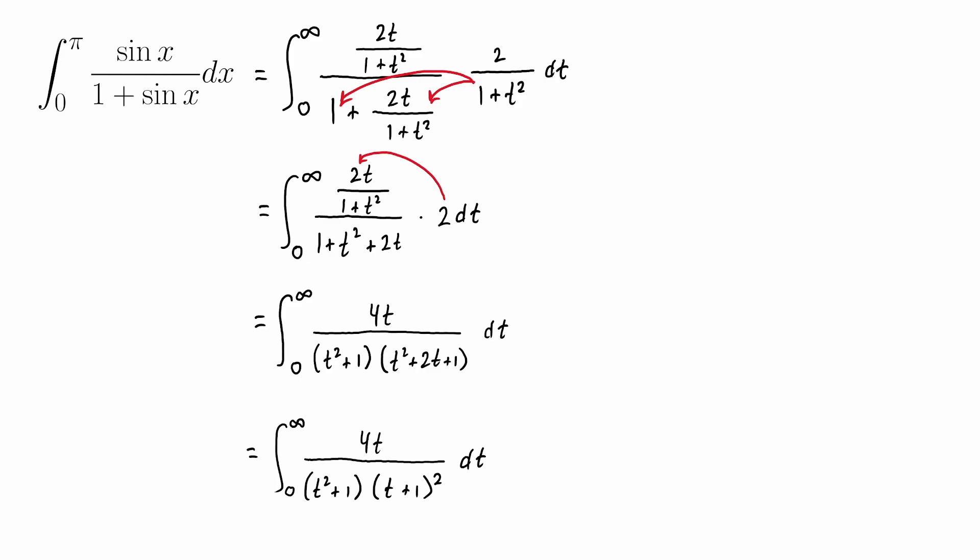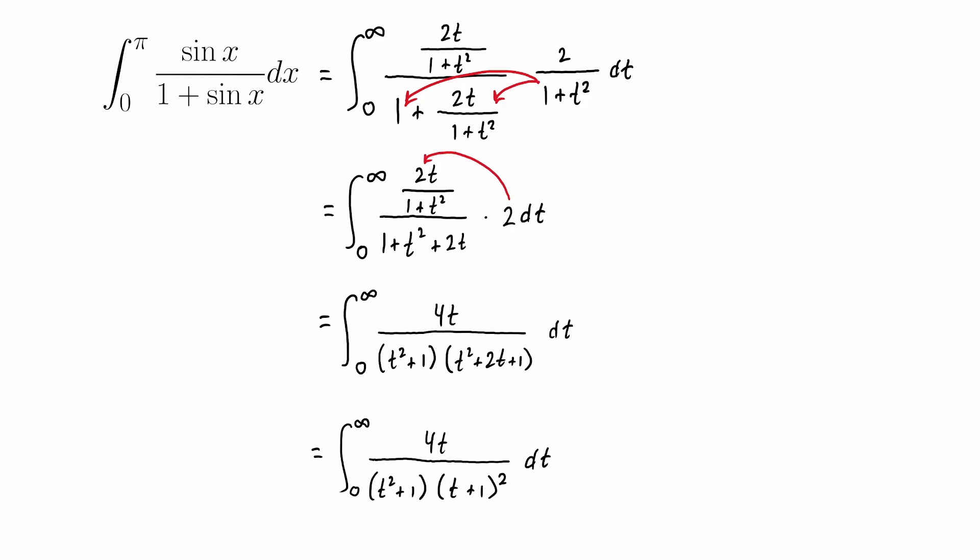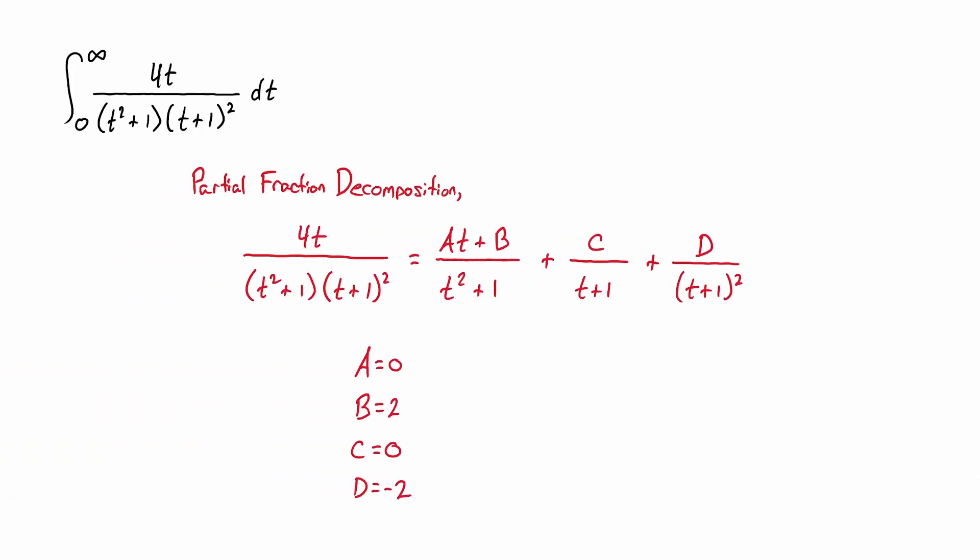I have the end result for the partial fraction decomposition here. With a little bit of algebra, you should be able to find that a equals 0, b equals 2, c equals 0, and d equals negative 2.